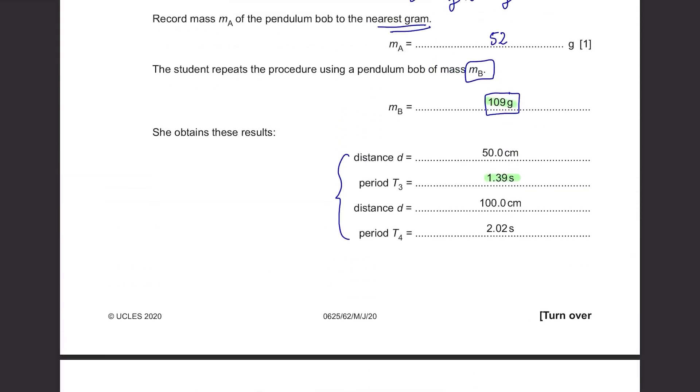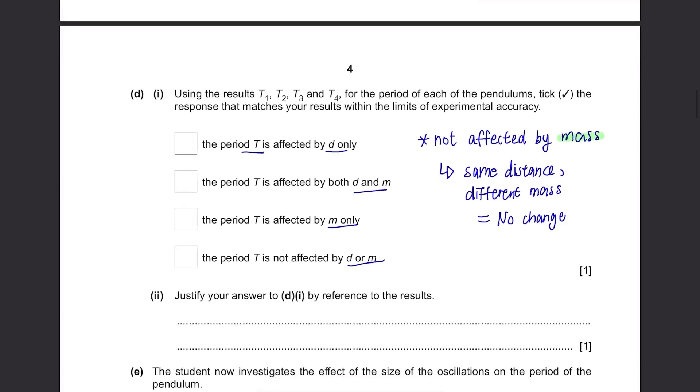However, when using the same mass, for example the mass of 109 grams, when the distance d is different, the period changes, showing that the period is affected by the distance. So the answer is, the period T is affected by d only.